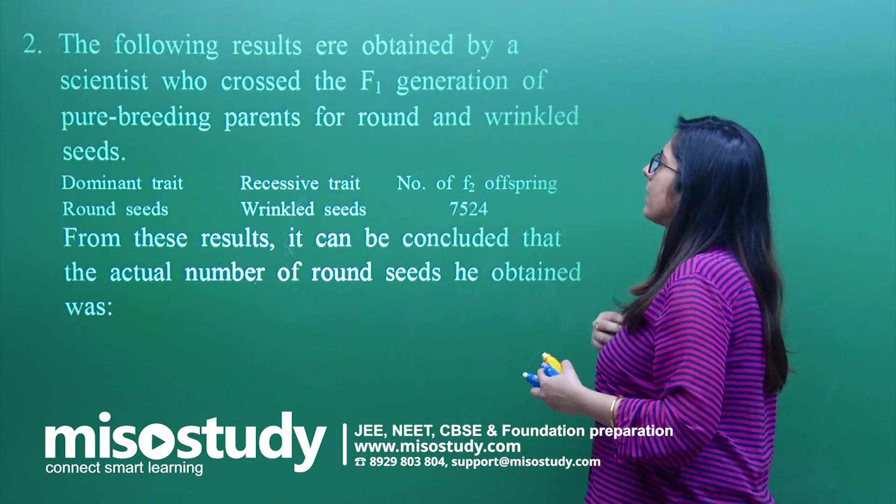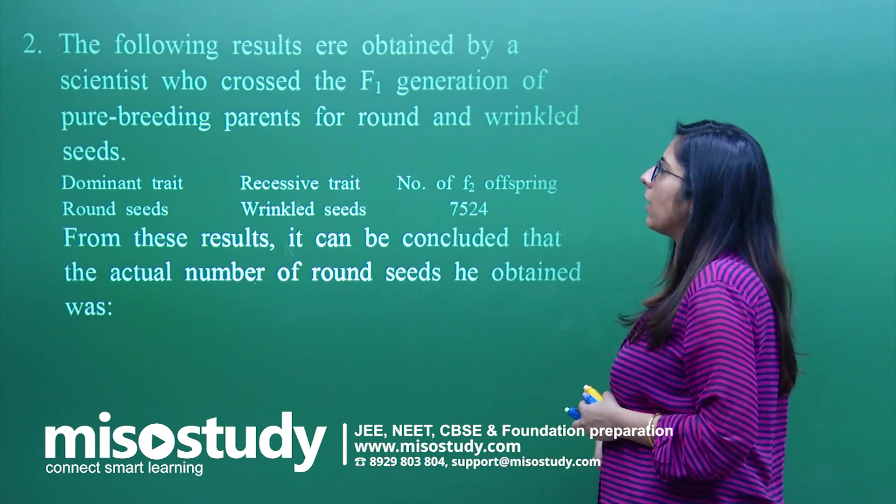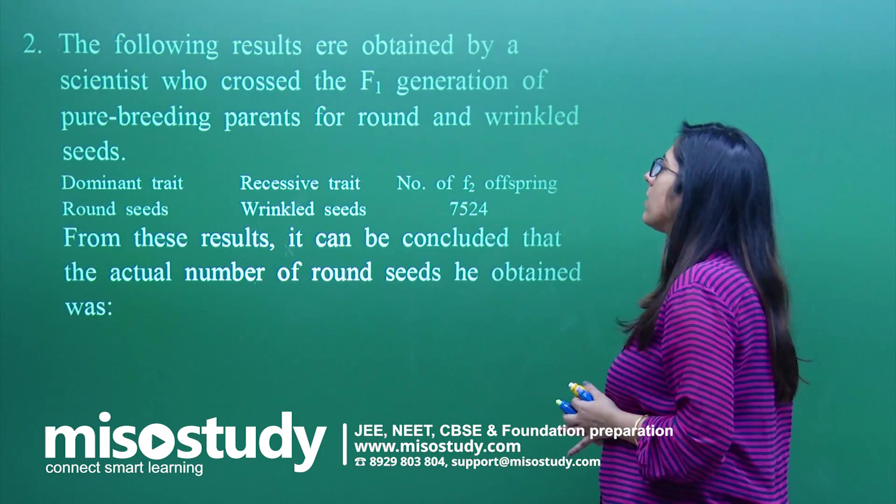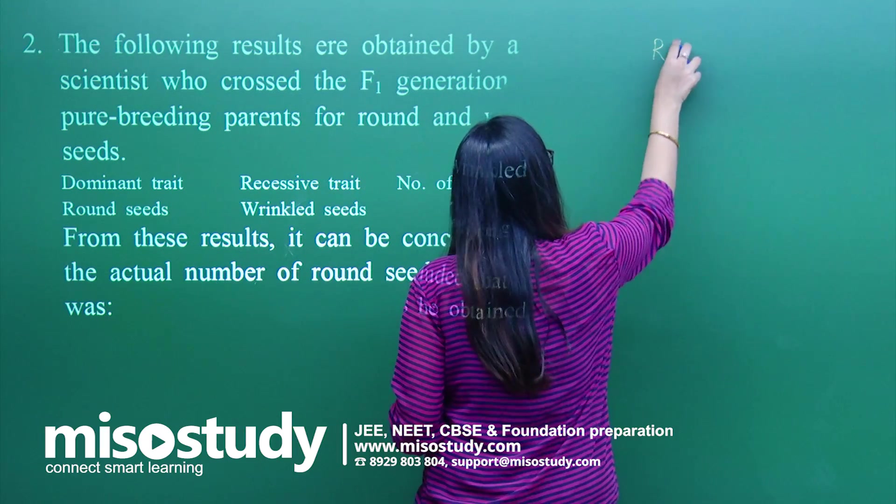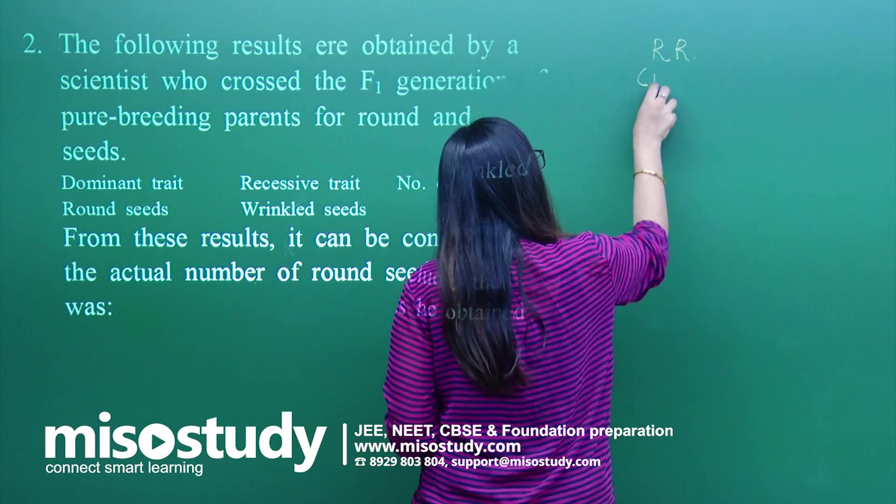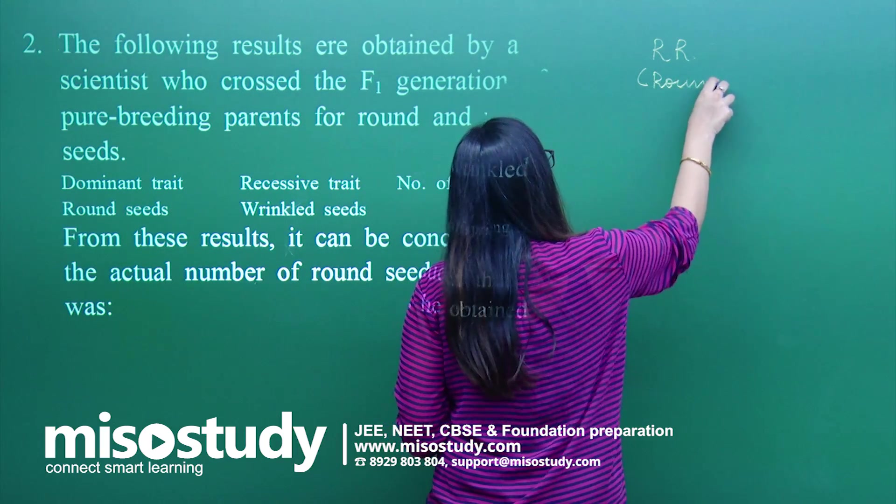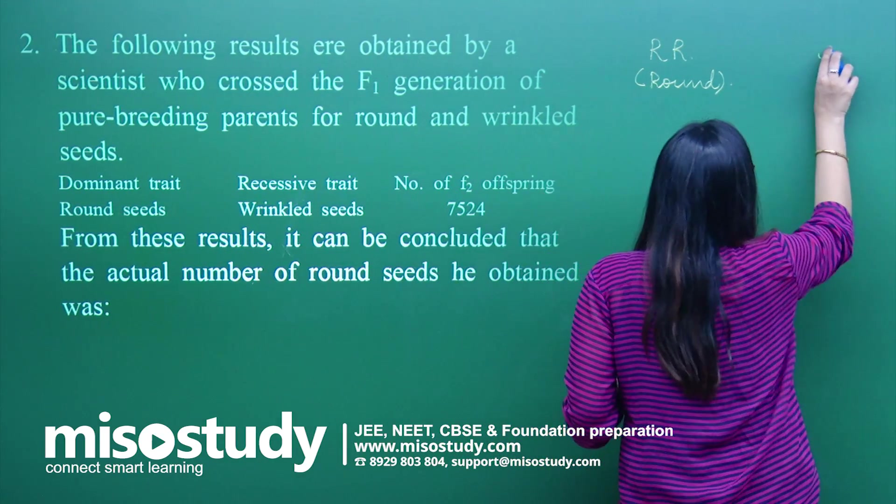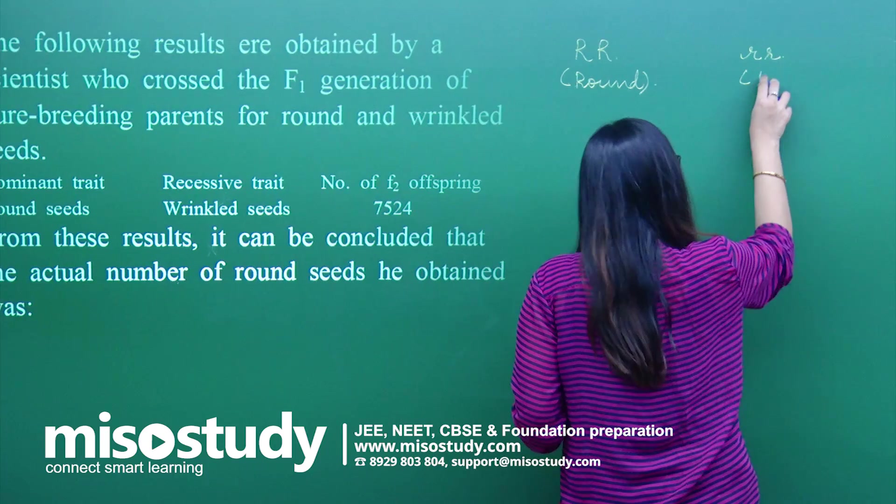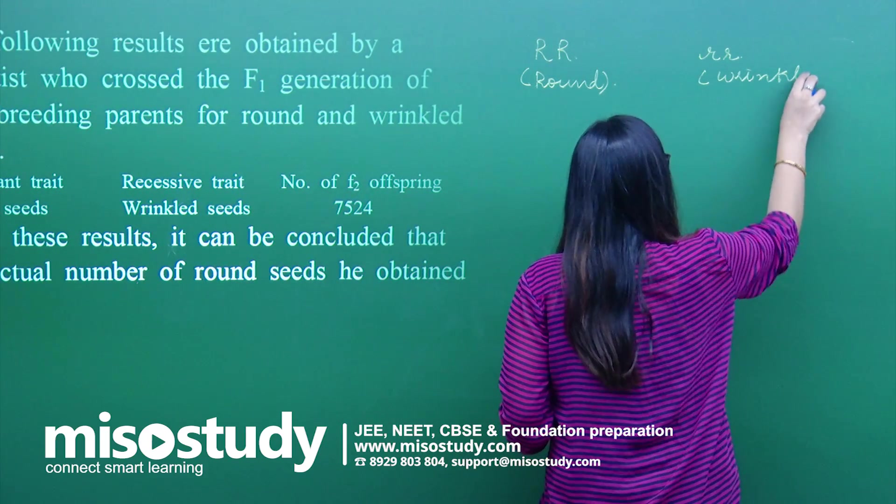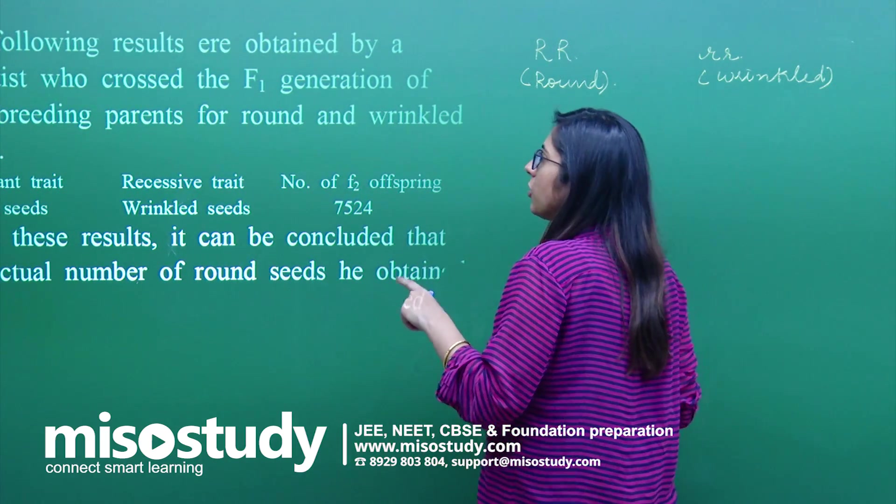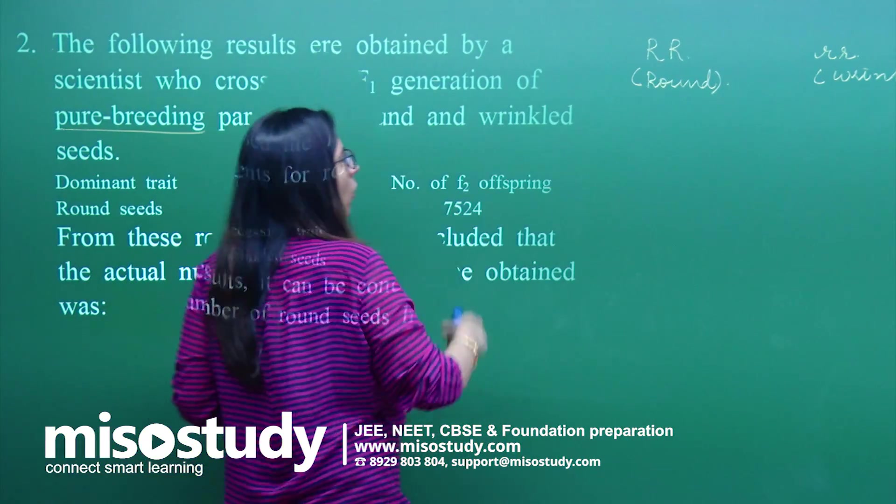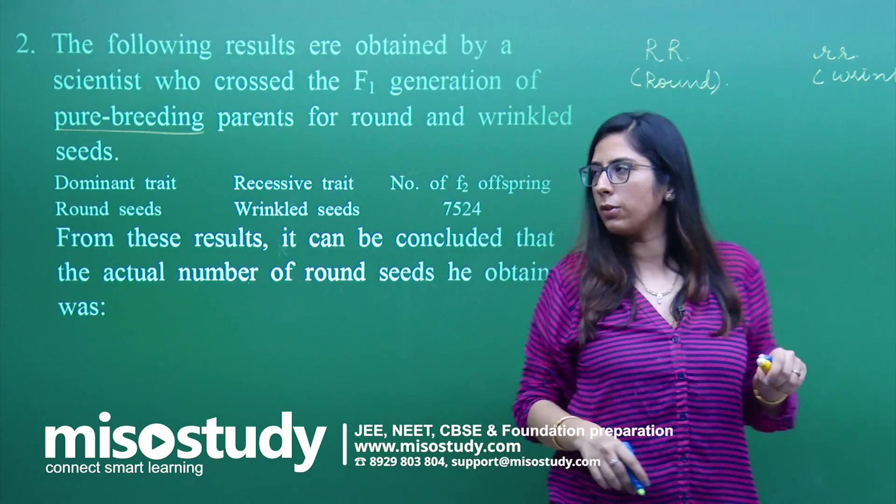Let us talk about question number two. The following results are obtained by a scientist who crossed F1 generation of a pure breeding parent for round and wrinkled seed. We have round seed, pure, capital R capital R, and we have wrinkled seed, small r small r. Question has already mentioned that they are talking about a pure breeding. That is the reason I have taken that in homozygous condition.